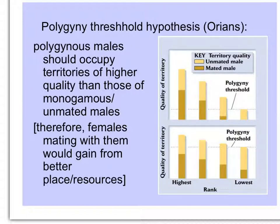This figure shows how the quality of the territory varies with the number of mates, such that there is a threshold — this dotted line — that is lower when resources are abundant and higher when resources are scarce.